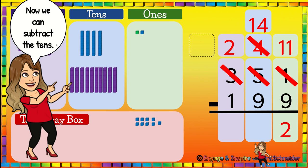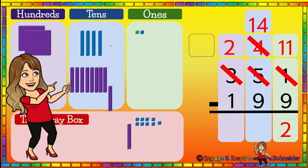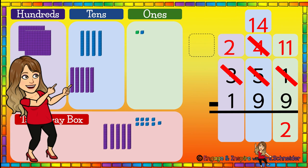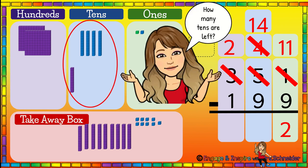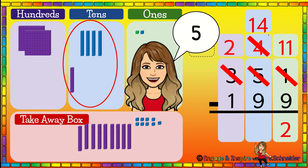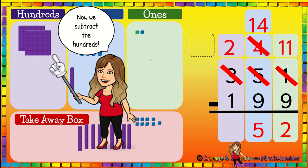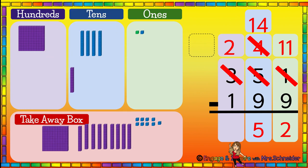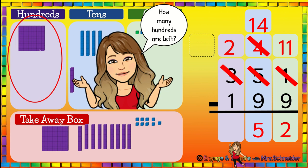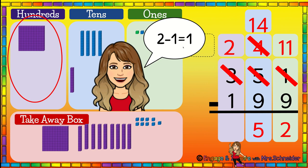Now we can subtract the tens — fourteen minus nine. One through nine. How many tens are left? Five. Fourteen minus nine is five. Last, we're going to subtract the hundreds. We have two hundreds and we need to take one away. How many hundreds are left? One. Two minus one is one. The answer to that problem was 152. Mrs. Schneider had 152 cookies left.